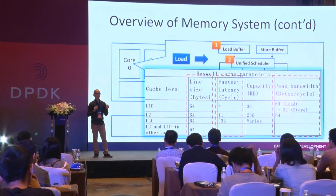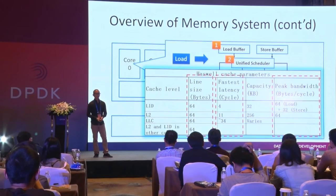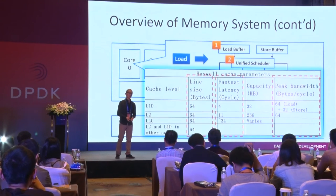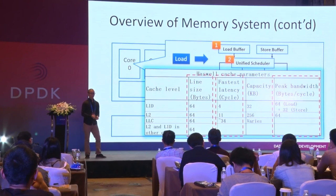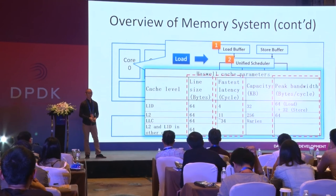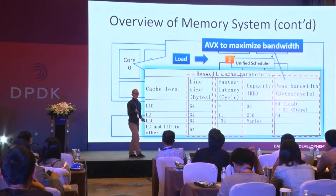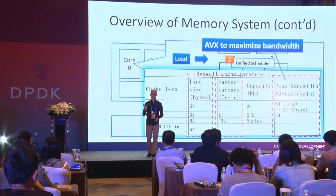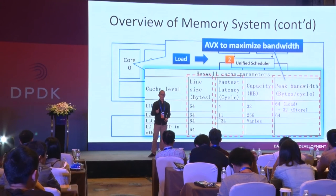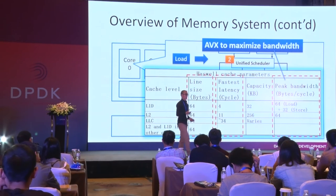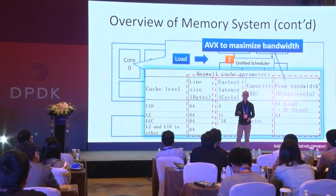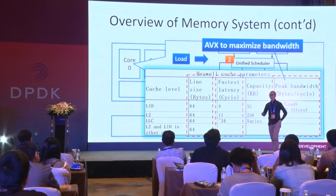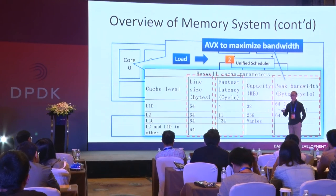For peak bandwidth, L1D can go through two loads plus one store per cycle. This data is collected from practical workload — a 2-to-1 ratio. If we would like to maximize the bandwidth, we will need to use AVX. Despite the maximum bandwidth, it can load 64 bytes because it supports two loads and one store. If we use AVX instructions, we can have 256 bits, which is 32 bytes. To maximize the bandwidth, we recommend using AVX.